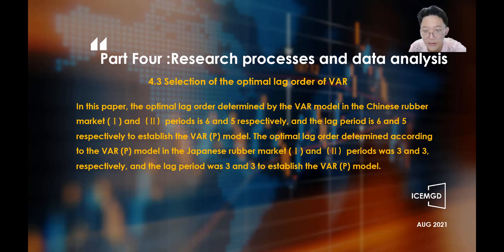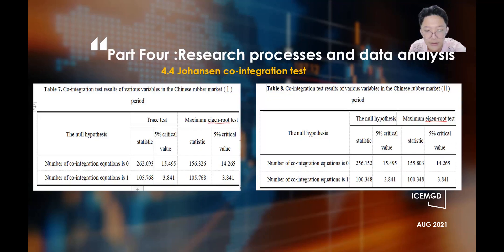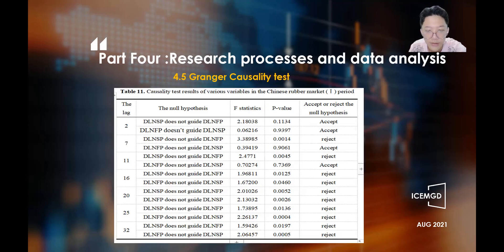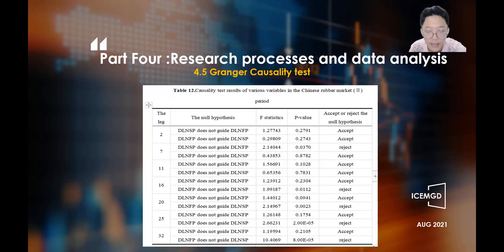According to the VAR model, the optimal lag order of the Japanese Rubber Market in the first and second periods is 3 and 3 respectively, and the VAR models are established with lag period of 3 for both periods. Johansen cointegration analysis was conducted to determine whether there is a long-term stable equilibrium relationship between the two price series. As seen from Tables 7 and 9, no matter which trace value or maximum eigenvalue test is adopted, a common conclusion can be drawn: the assumption that there is no cointegration relationship between futures and spot prices in the domestic rubber market is rejected at a significance level of 5%, and the assumption of at most one cointegration relationship is accepted. Granger causality test results for the domestic rubber market in the first and second periods are shown in Tables 11 and 12.